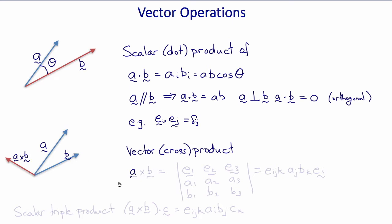We compute the cross product by computing the determinant of the following matrix: the matrix containing e1, e2, and e3 in the first row, a1, a2, and a3 in the second row, and b1, b2, and b3 in the third row. In index notation, this can be shown to be eijk, which is the permutation symbol, times aj times bk times ei.